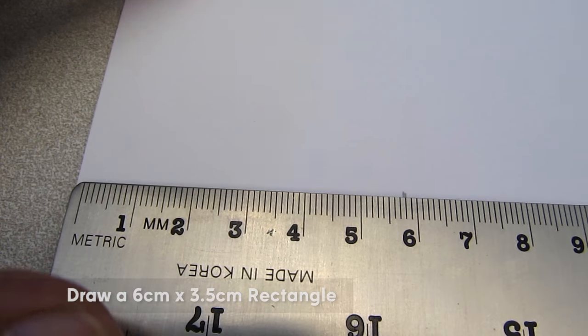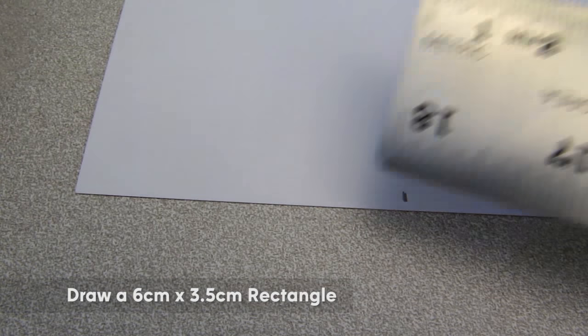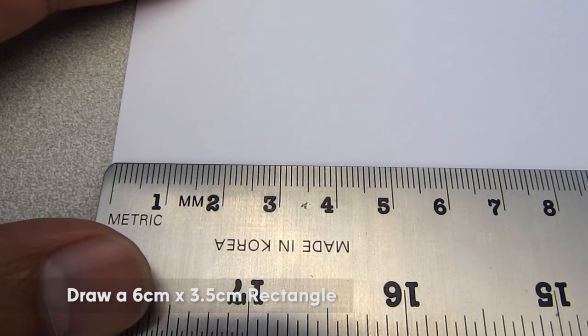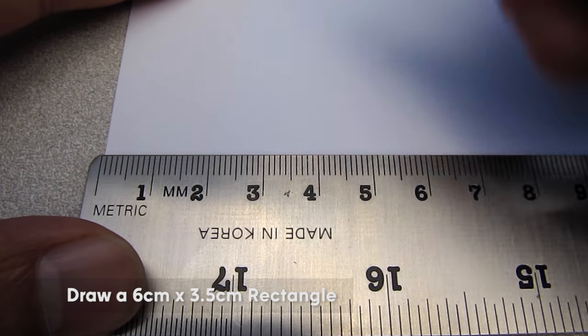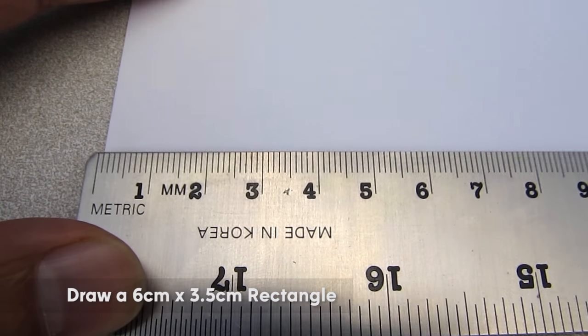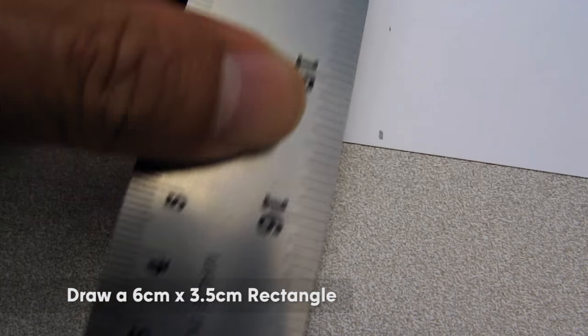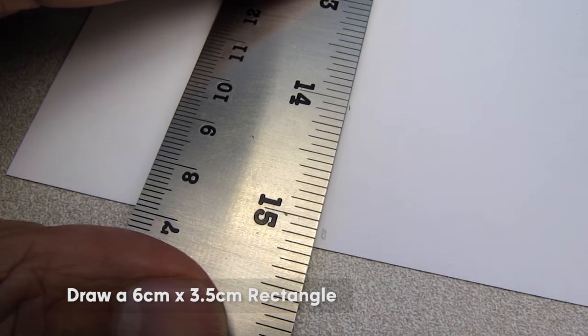Take the cardstock first and measure 6cm from one edge. Then do it again a little bit above the edge of the paper. Draw a line here at 6cm.